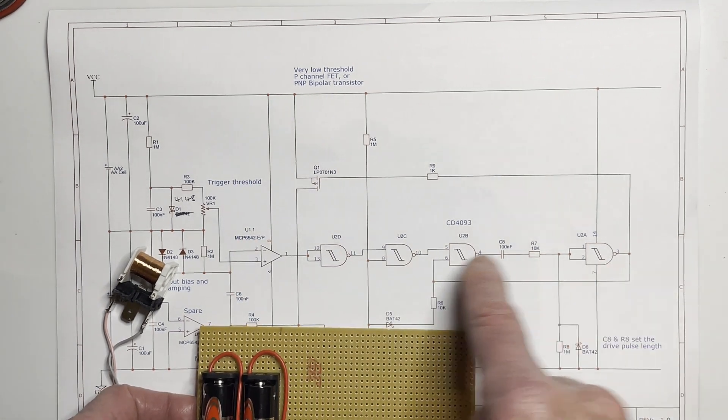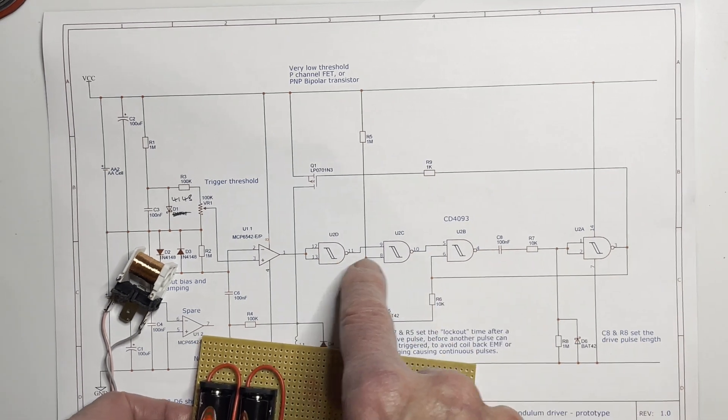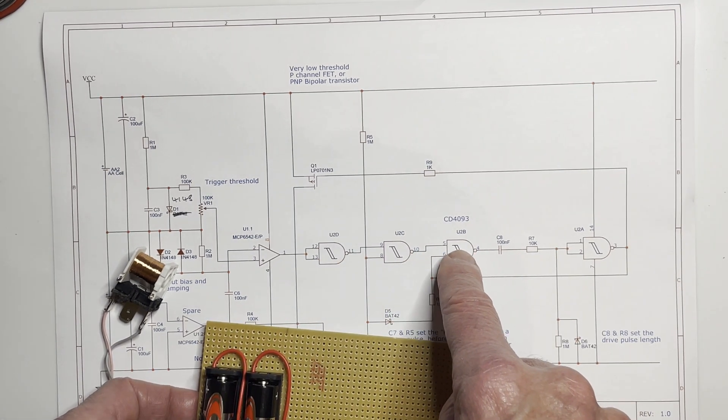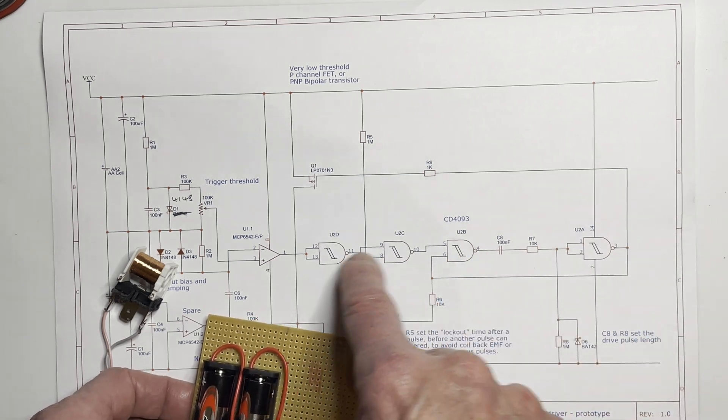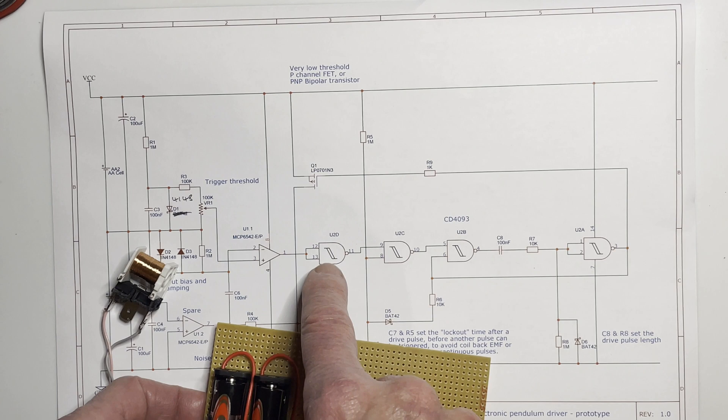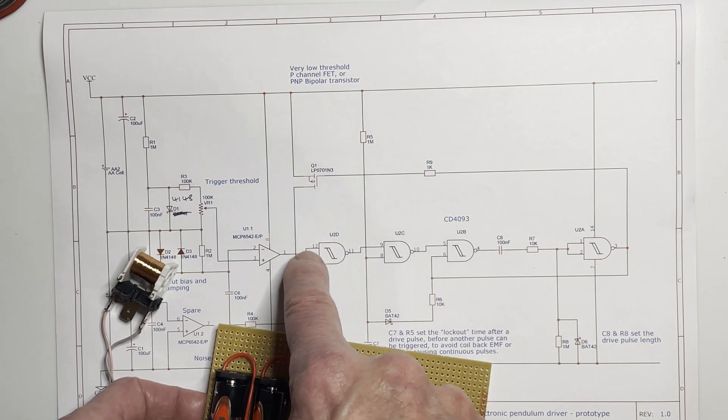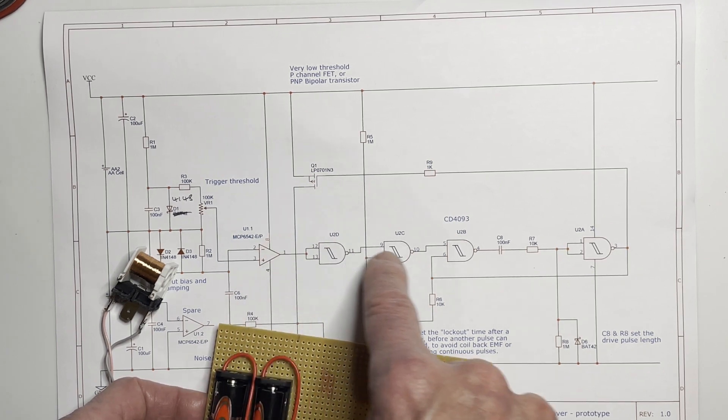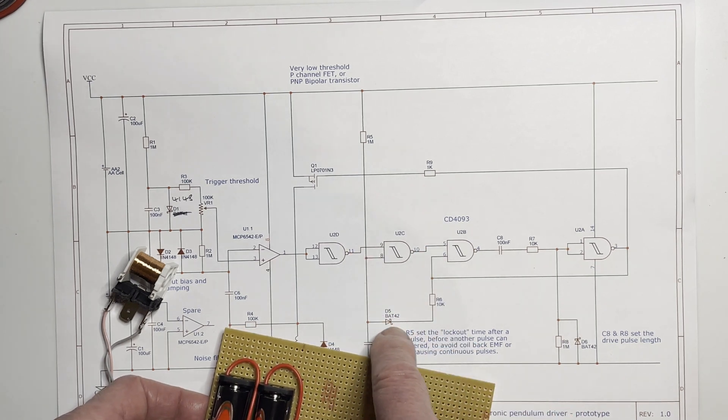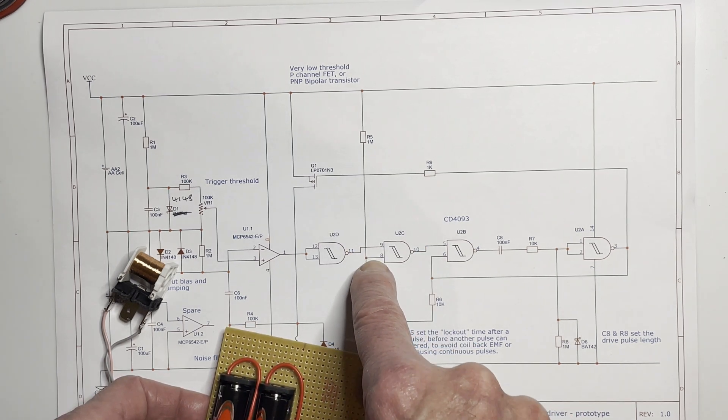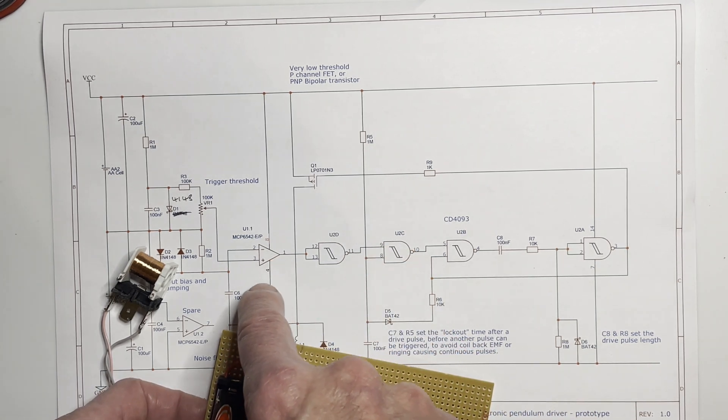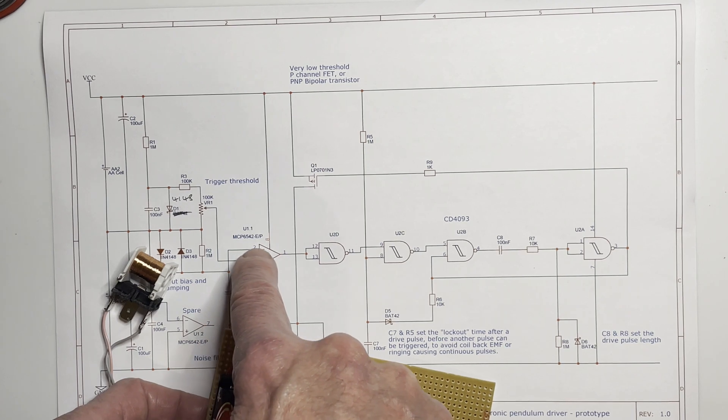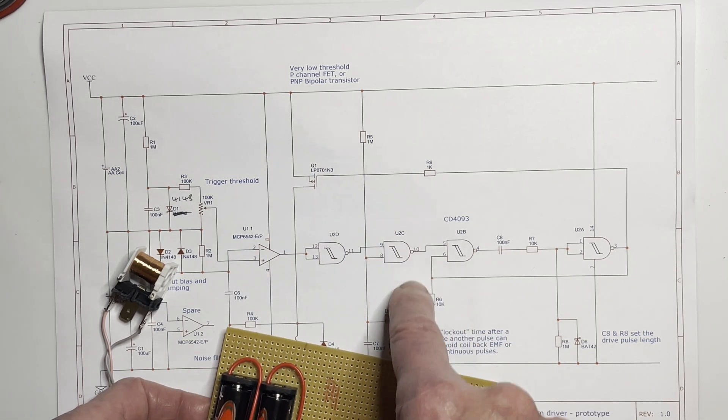Then the rest of it is discrete components and a CD4093 which is a quad NAND Schmitt trigger gate, which is only a few pence. And basically that inverts the signal. Normally that pin's high, so to start with you can ignore it. That's high so that's acting as an inverter again. So when it sees a positive pulse at the input, that goes low, that goes high, that goes low.